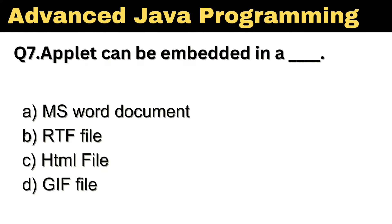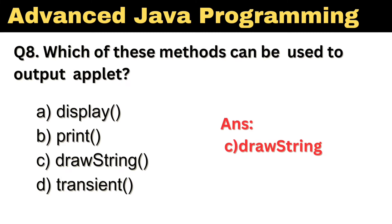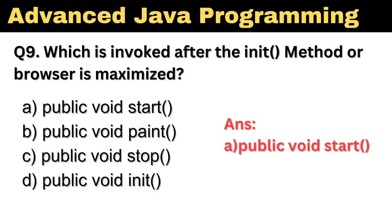Question No. 7: Applet can be embedded in a dash. The right answer, Option C, HTML File. Question No. 8: Which of these methods can be used to output an Applet? The right answer, Option C, DrawString. Question No. 9: Which is invoked after the init method or browser is maximized? The right answer, Option A, Public Void Start.